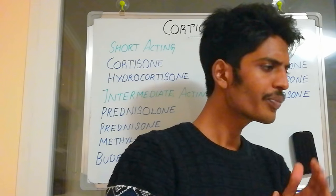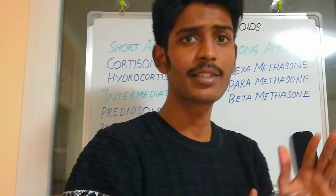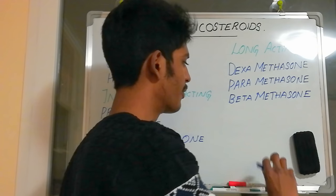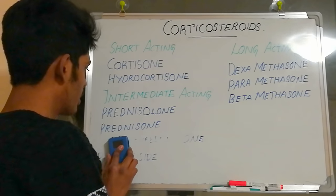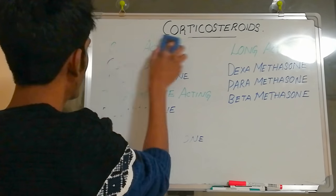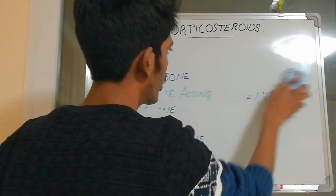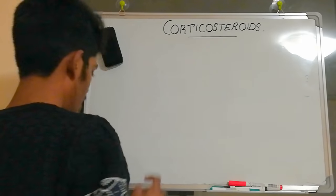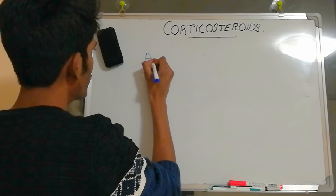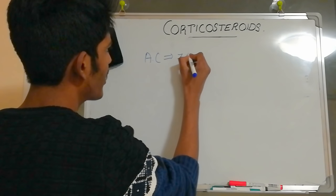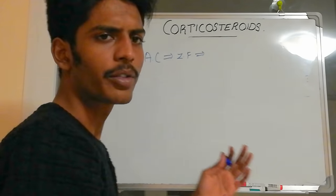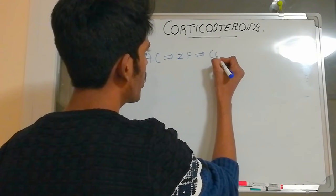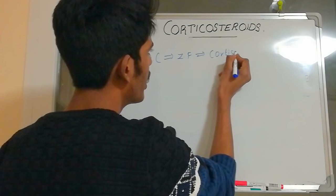Now we'll discuss where exactly these steroids are produced in our body and what their importance is. They are produced in the adrenal gland — specifically in the adrenal cortex. Within the adrenal cortex, there is an area called the zona fasciculata, and from that area these corticosteroids are produced.